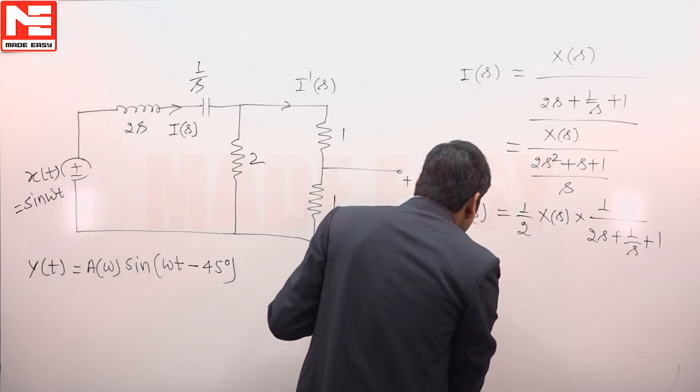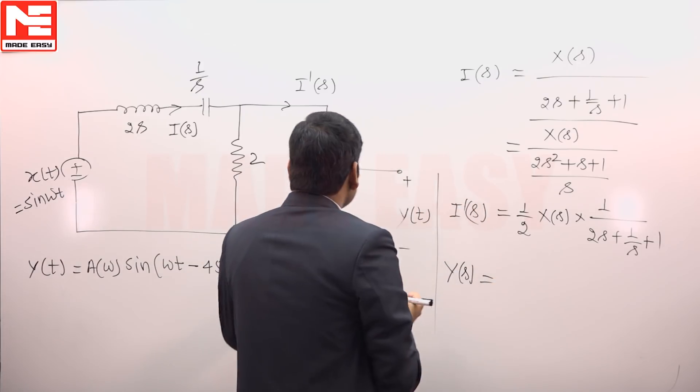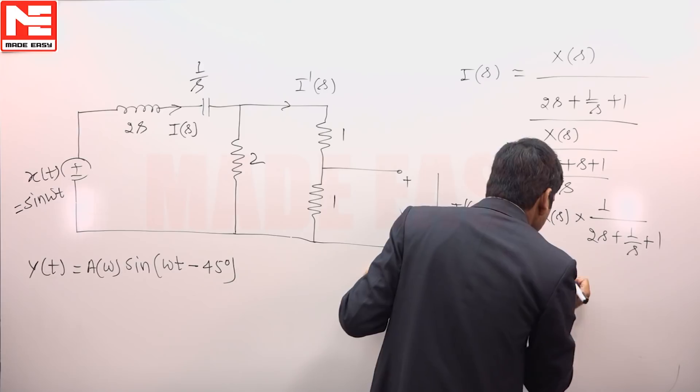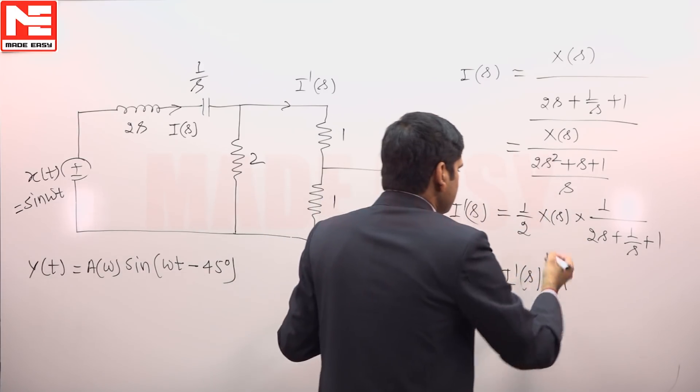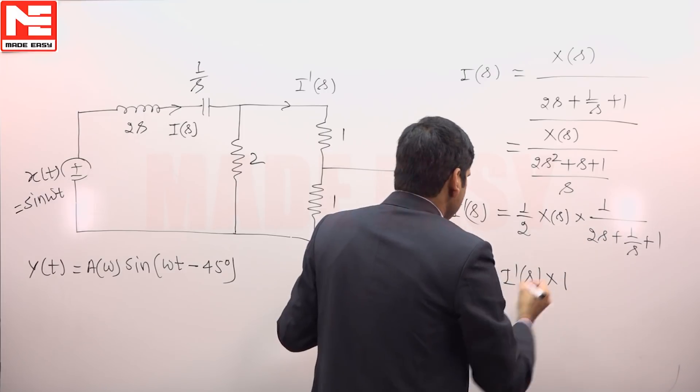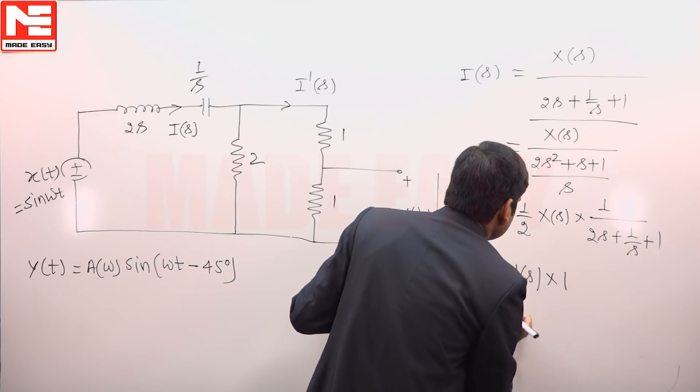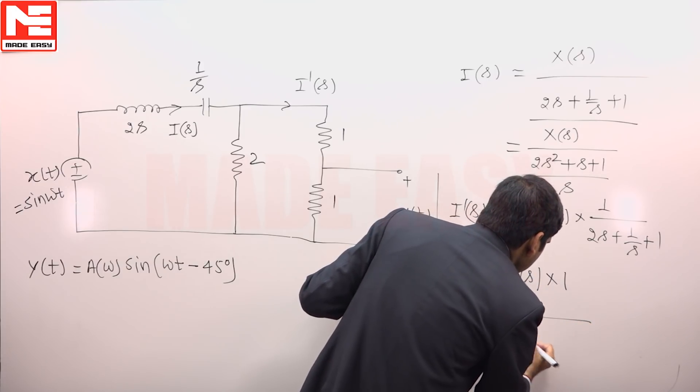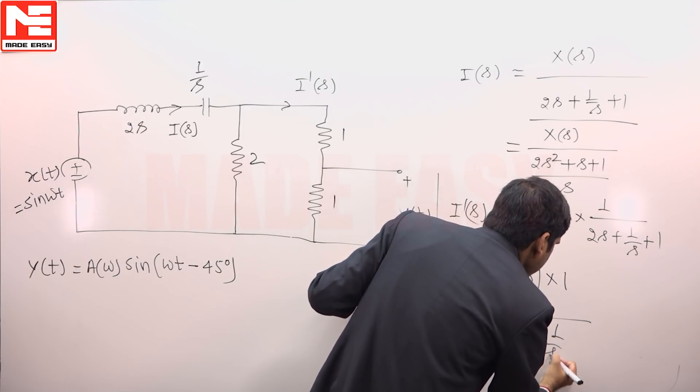y(s) will be equal to this current into 1, i'(s) × 1. i' is simply this value if we put. So y(s) is equal to x(s)/(2(2s + 1/s + 1)).